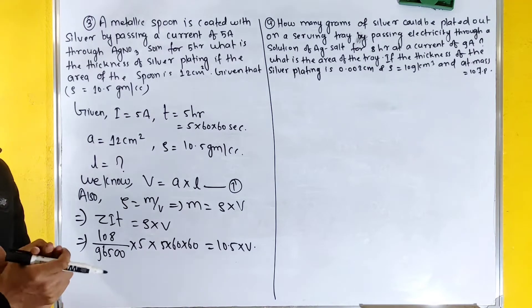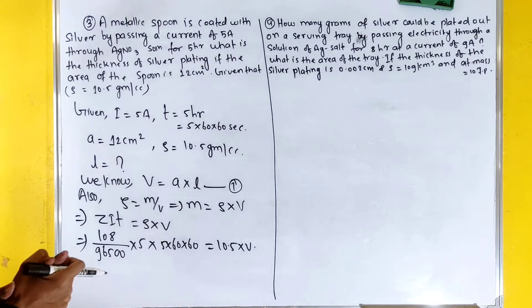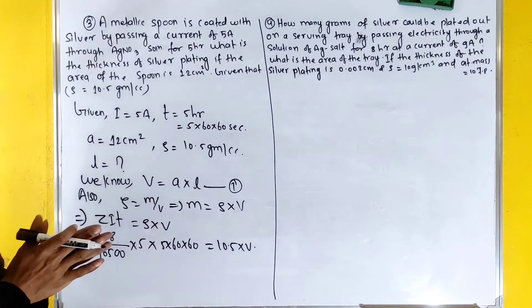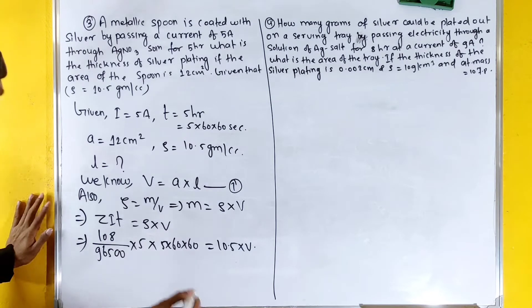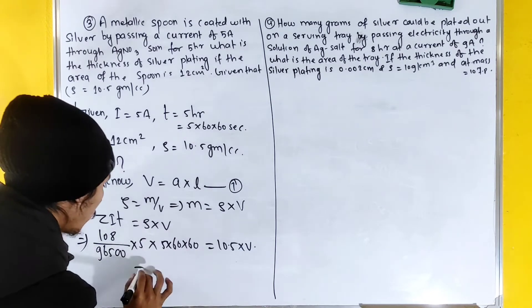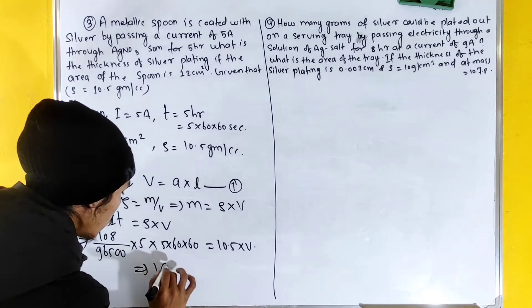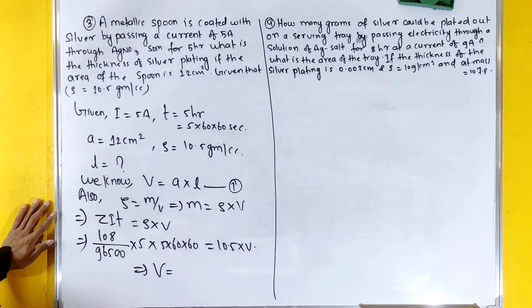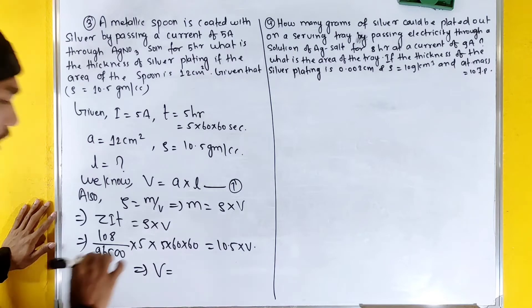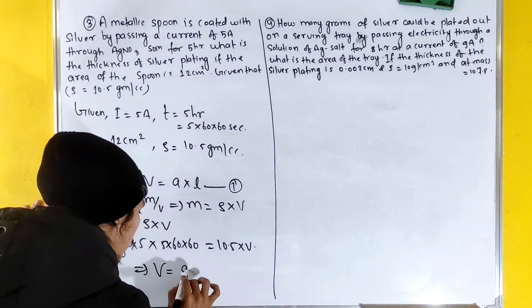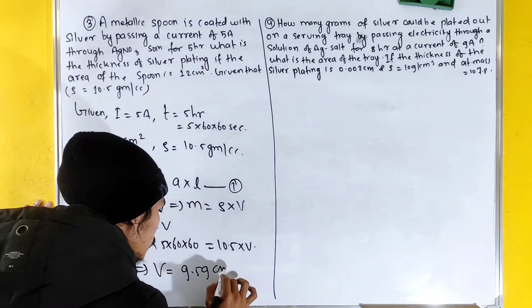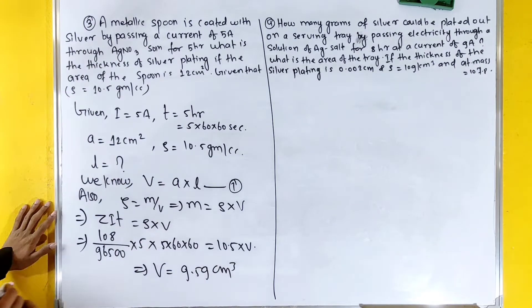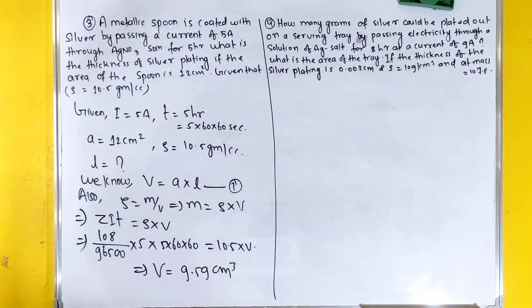From equation 1, after calculation, volume comes out to be 9.59 cm³.